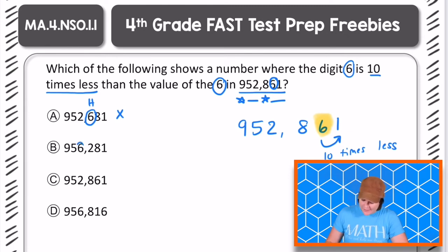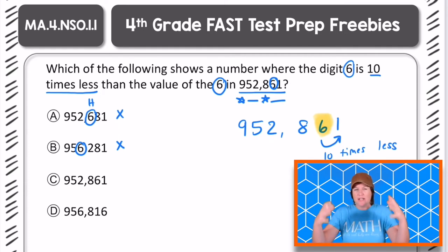Next, 956,281. Is that digit 6 in the 1s place? No. So it's not 10 times less than the original number. So we can eliminate that one too. You see how I'm marking it up and showing my thinking as I go? So that's a great strategy to help you kind of slow down, not too slow, but help you really engage and not make as many mistakes.